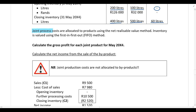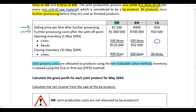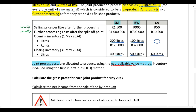Joint process costs are allocated to products using the net realizable value method. We need to allocate the joint production costs to the joint products, so joint production costs will be allocated to SM and to BW. CA is a byproduct, so we won't allocate any of the joint production costs to CA. There are four different methods that can be used to allocate joint costs, and in this example we are told to use the net realizable value method.